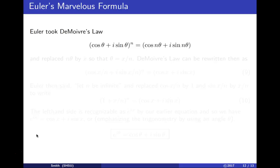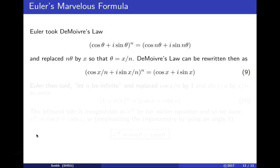Euler then took DeMoivre's law (cos(θ) + i·sin(θ))^n = cos(nθ) + i·sin(nθ) and replaced nθ by x, so θ = x/n. This rewrites DeMoivre's formula as (cos(x/n) + i·sin(x/n))^n = cos(x) + i·sin(x).